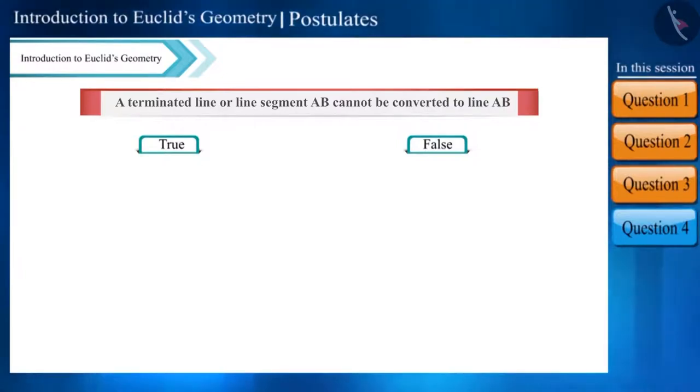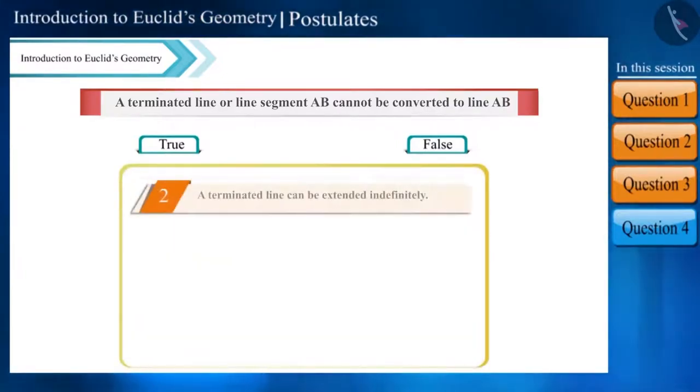Friends, according to the second postulate of Euclid, a line segment can be increased indefinitely. This means we can extend the line segment AB indefinitely, and an indefinitely increased line segment is a line. Therefore this statement is false.